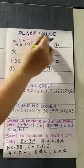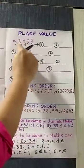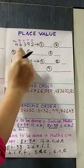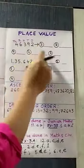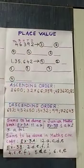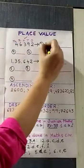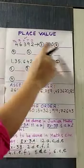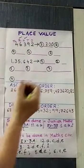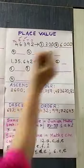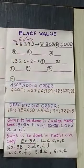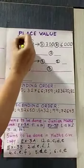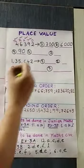Now we will go to place value. Here you see two numbers are written. The first one is 46,392. Place values are written above the number and you will have to write the place value for each digit. The place value of 3 is hundreds, so we write 300. The place value of 6 is thousands, so we write 6,000. The place value of 9 is tens, so we write 90. The place value of 4 is ten-thousands, so 4 × 10,000 means 40,000.